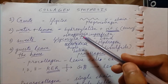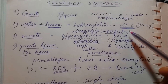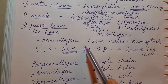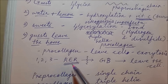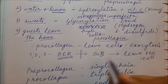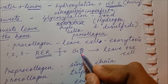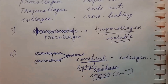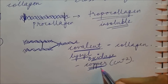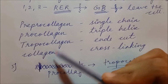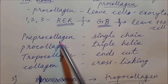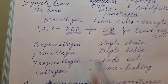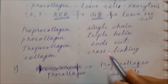Let's recap the high-yield points: first, vitamin C is required during hydroxylation; second, glycosylation defects cause osteogenesis imperfecta; third, if there is a problem transporting procollagen from the RER to the Golgi, procollagen accumulates in the RER; if the problem is from the Golgi to outside the cell, there will be swelling of the Golgi body; and finally, lysyl oxidase requires copper for cross-linking. Pre-procollagen is a single chain; procollagen is a triple helix; after covalent cross-linking it is called collagen.